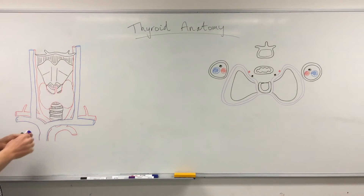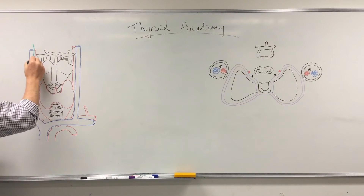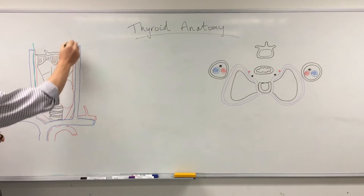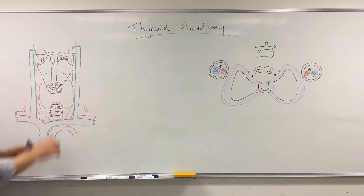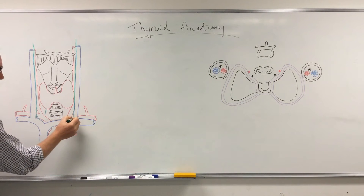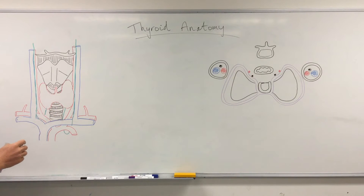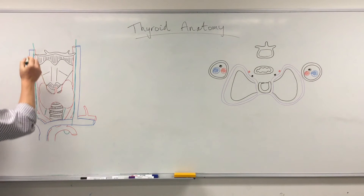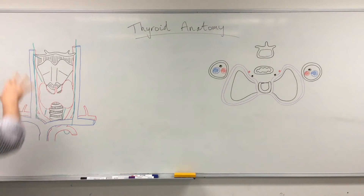Coming down from the top is the vagus nerve, running alongside those two blood vessels on either side. The left and right vagus supply the heart, lungs, and gut, but each gives a branch that loops back: on the right, the recurrent laryngeal nerve loops under the subclavian and travels behind the thyroid; on the left, it loops under the arch of the aorta and comes back up behind the thyroid. There is also the superior laryngeal branch, whose internal branch enters the thyrohyoid membrane and whose external branch runs behind it.